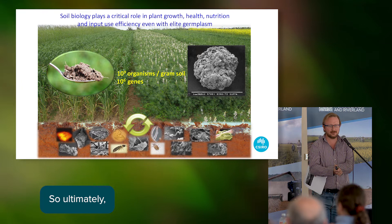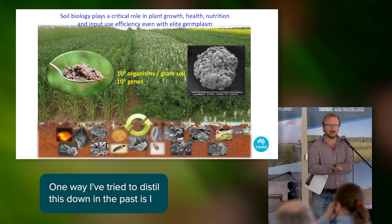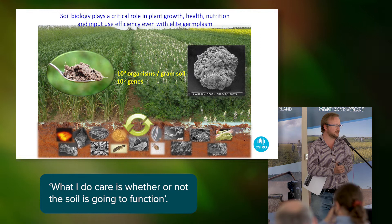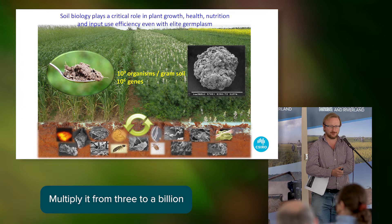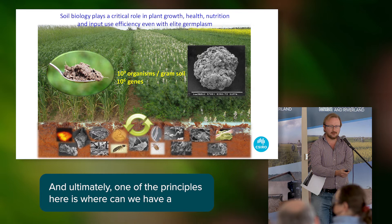We're interested in the functional diversity rather than the actual species diversity in the soil. One way I've tried to distill this down: I don't really care whether Tom, Dick and Harry are there - what I do care is whether this process is going to function if Tom happens to die, and Dick and Harry can carry on with that process. Multiply that up from three to a billion different genes present in the soil and you'll get an idea of the complexity that lies there.